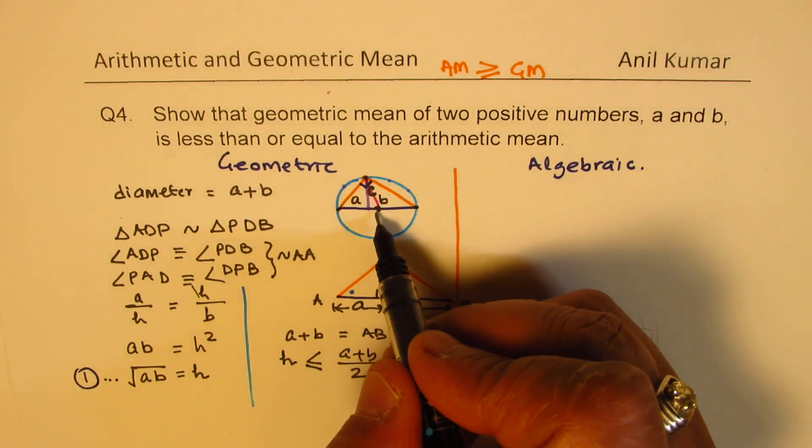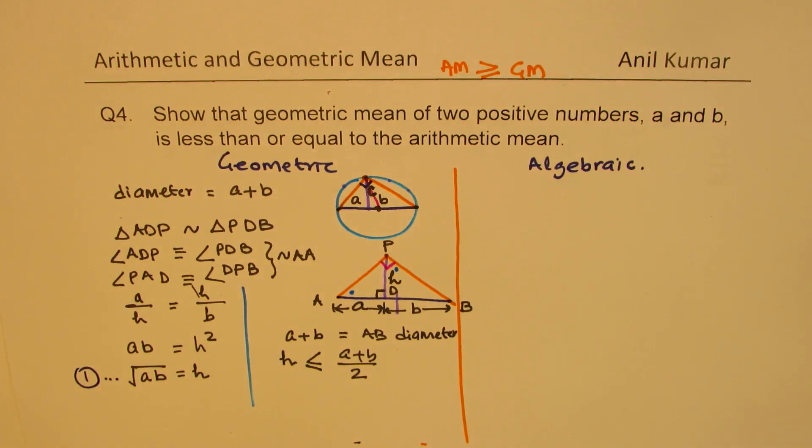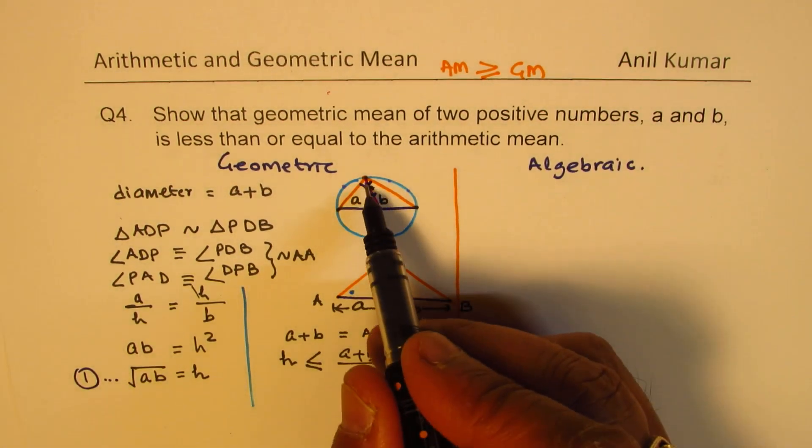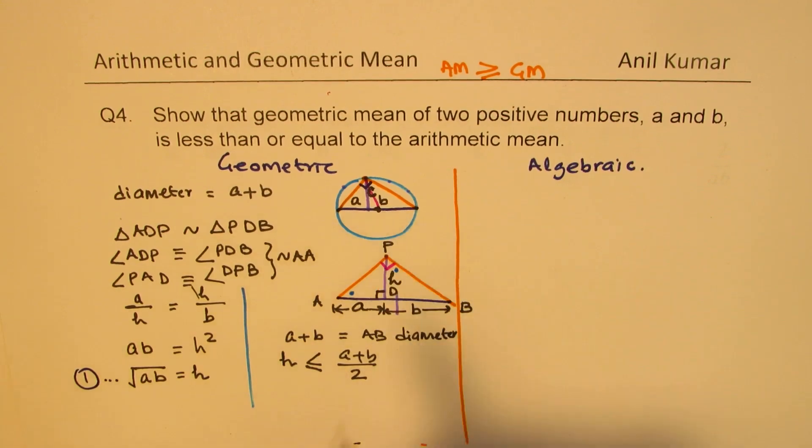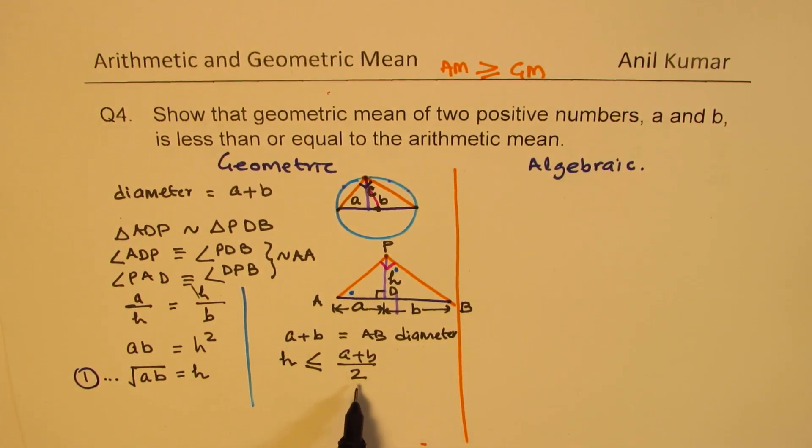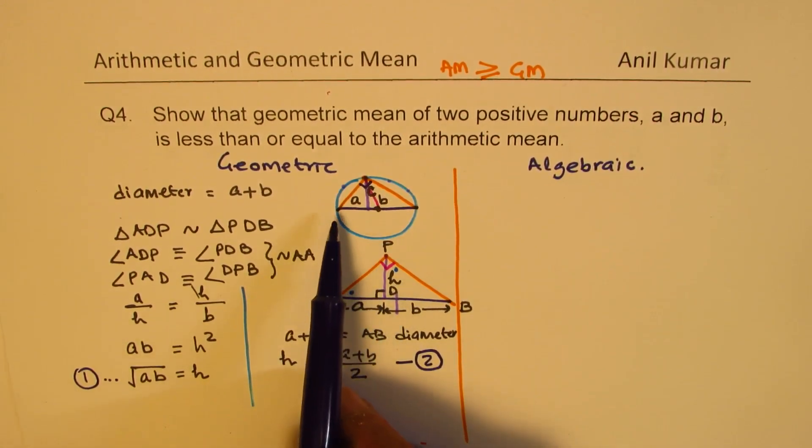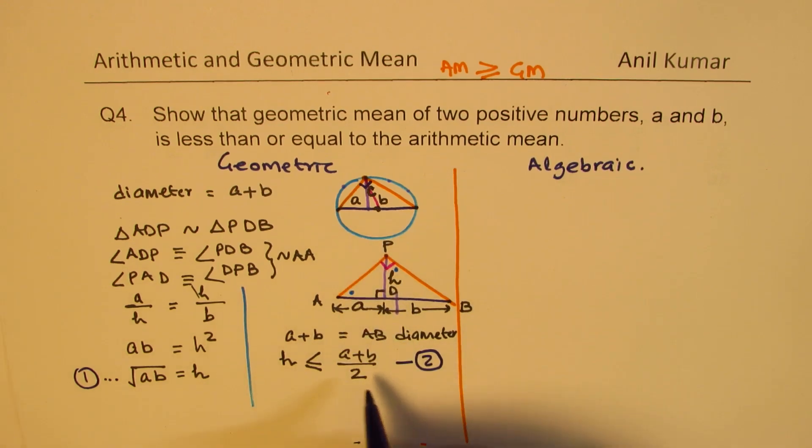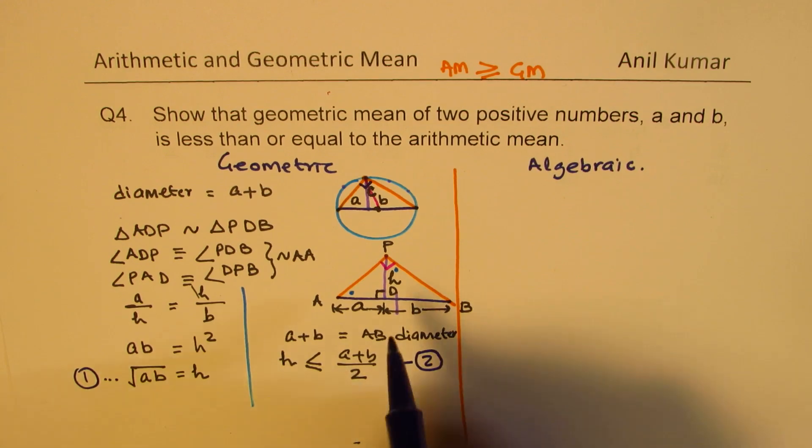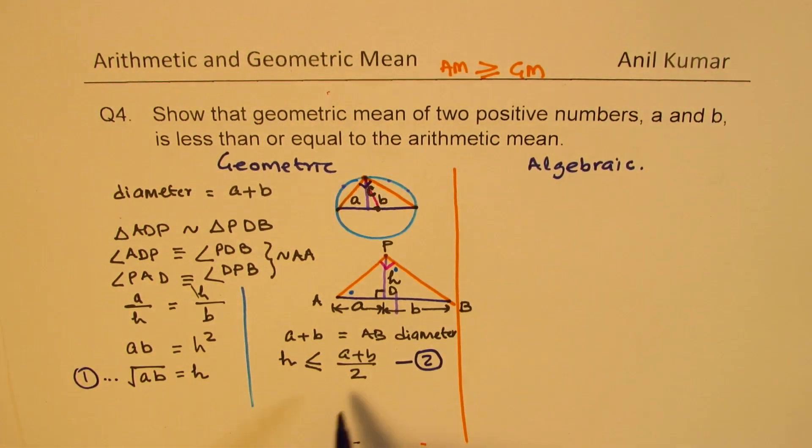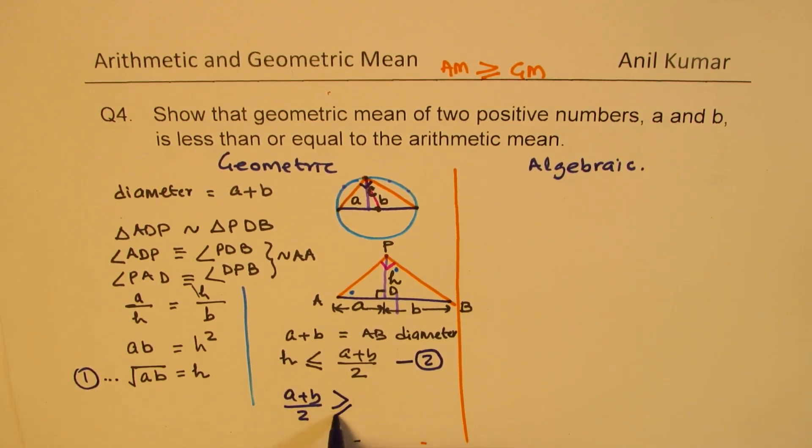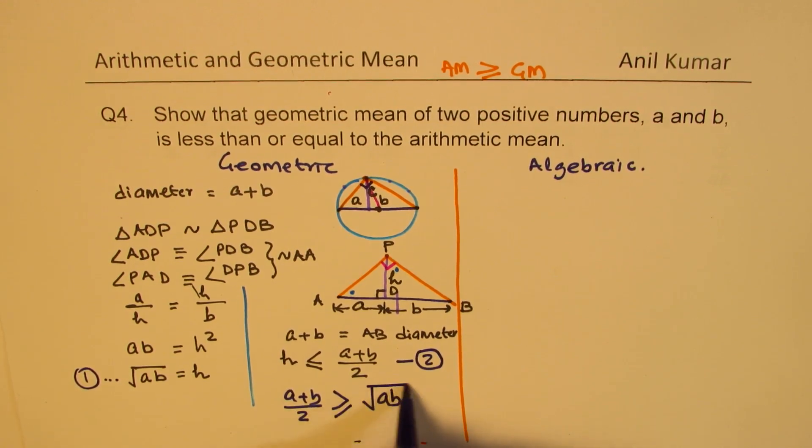So height, but half of the diameter, which is the radius, is definitely more than the height. So from here, you can clearly see that H is equal to square root of AB. And this second equation says that A plus B divided by 2 is the radius. Since the radius is bigger than H, at the most it could be equal to, we come to a conclusion that A plus B over 2 is greater than or equal to square root of AB. Is that clear to you?